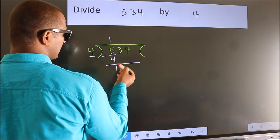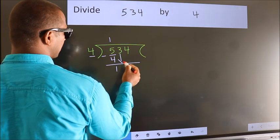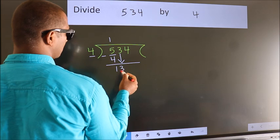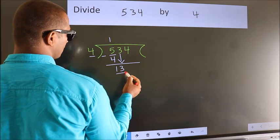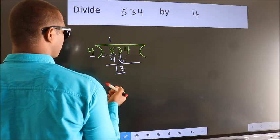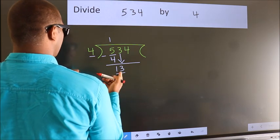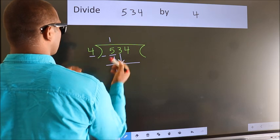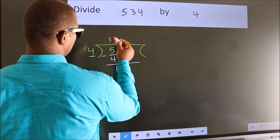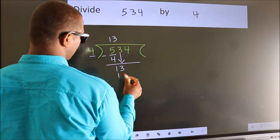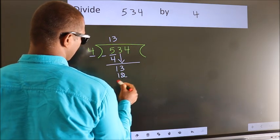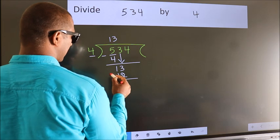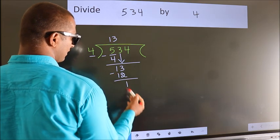After this, bring down the beside number. So, 3 down — so, 13. A number close to 13 in the 4 times table is 4 threes are 12. Now we subtract. We get 1.